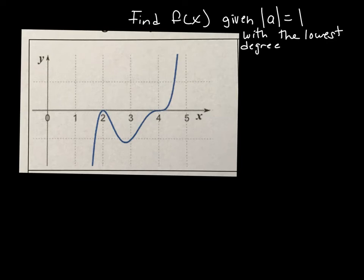Okay, so what we want to do with this section is go ahead and write a function from this graph. We know we're going to have some kind of polynomial function, and the first thing we're going to look at here are our zeros. So I have a zero here, but notice that zero does not cross that x-axis.